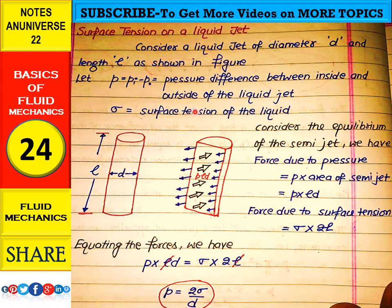Sigma is the surface tension of the liquid. Now, here we can see the arrow in this direction, the arrow at the surface of this half of the liquid jet.